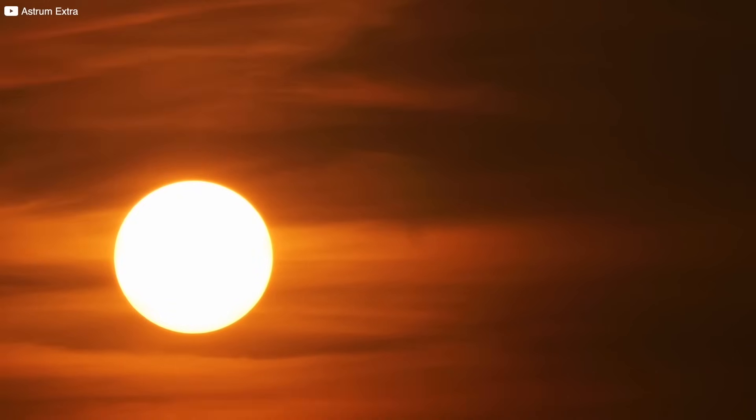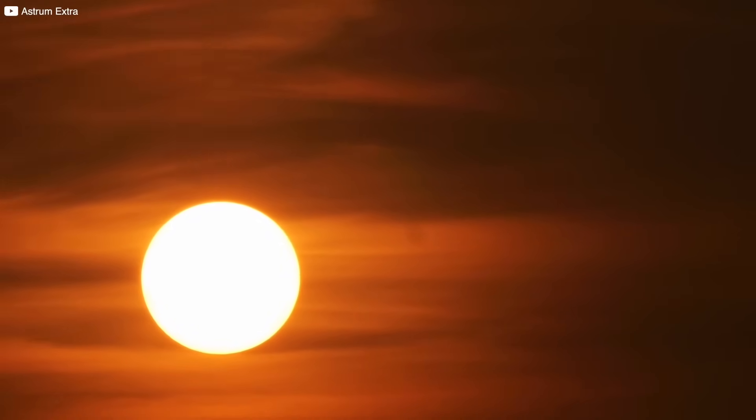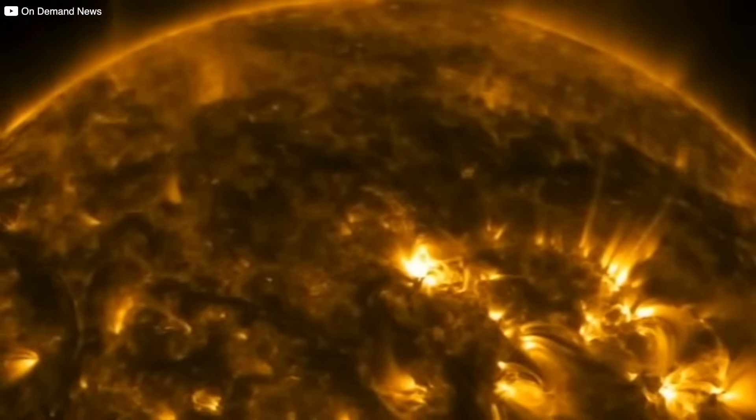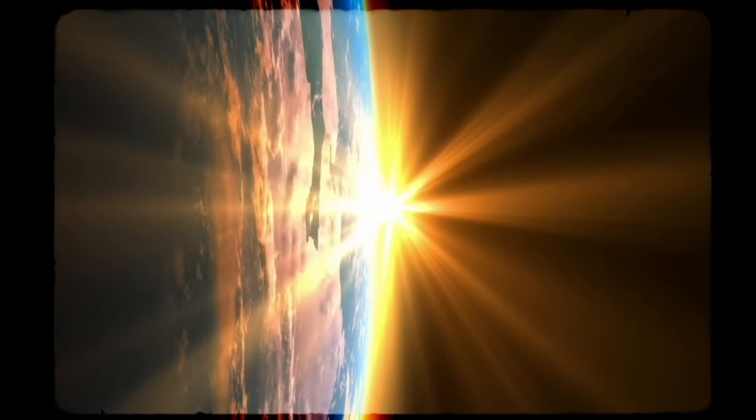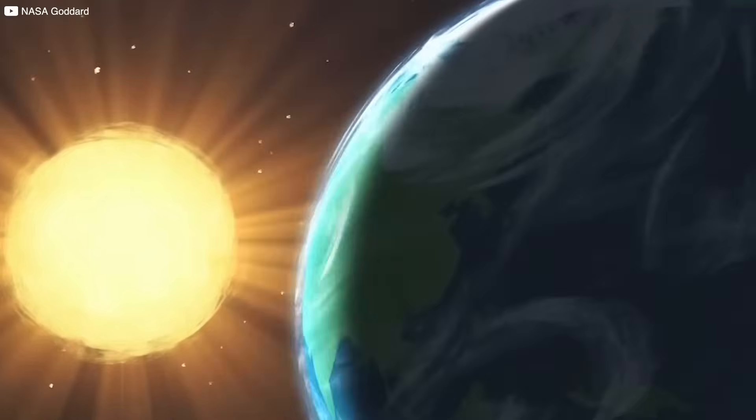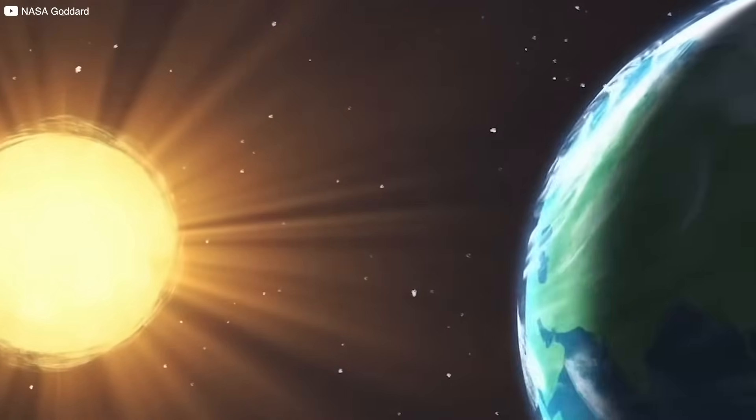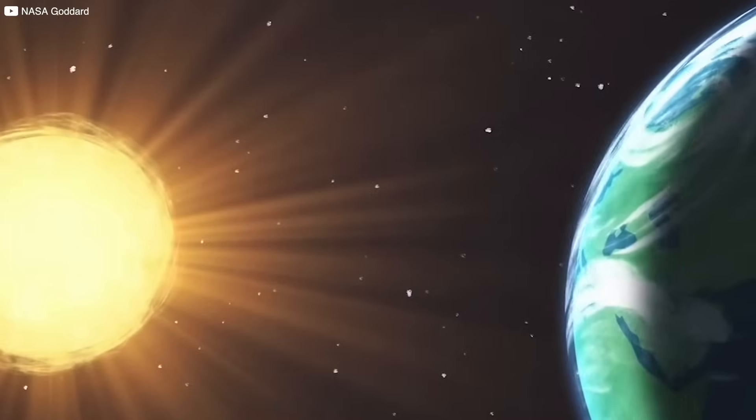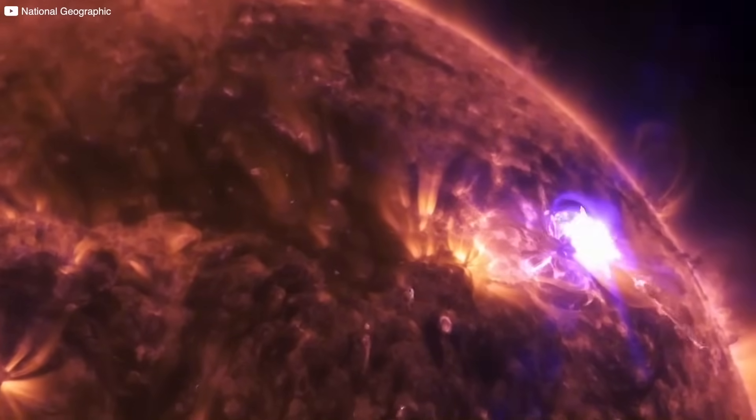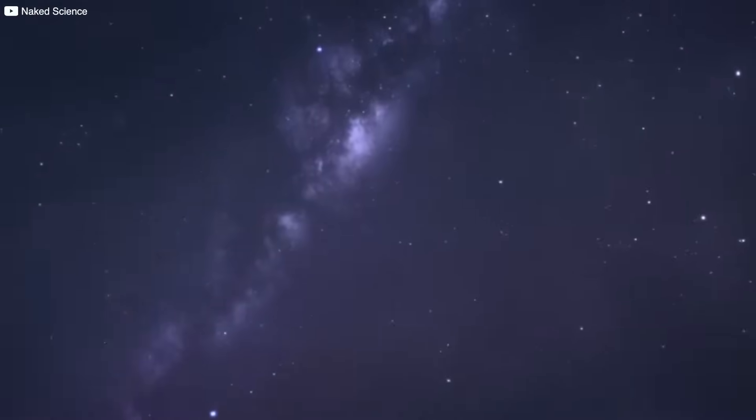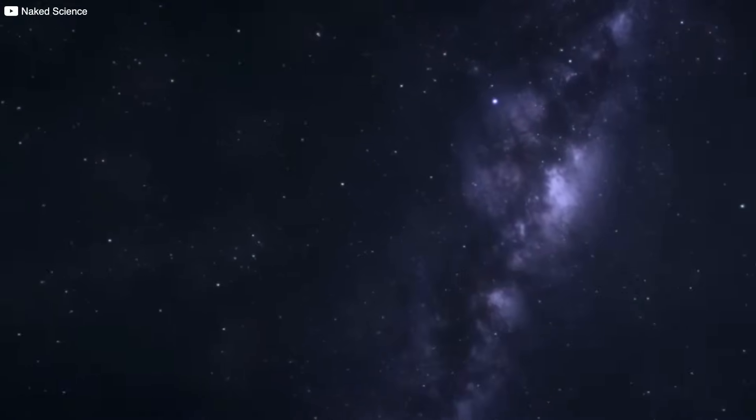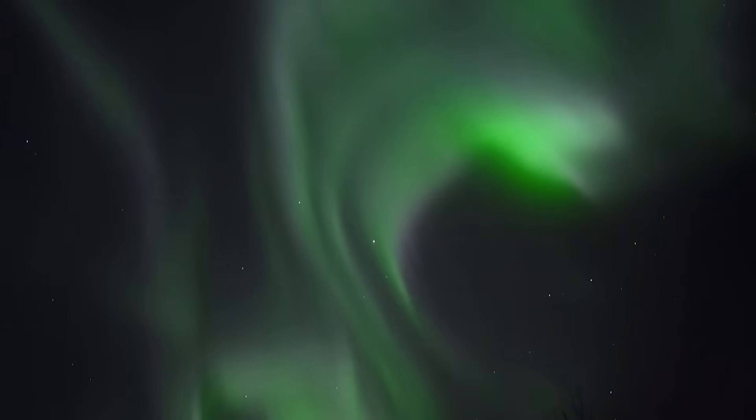Our Sun is more than a beacon of light and heat. It continuously emits a stream of charged particles known as the solar wind. This wind forms a colossal bubble around the solar system called the heliosphere, a protective shield that deflects much of the dangerous cosmic radiation from deep space. However, this bubble has limits. Billions of miles from the Sun, the solar wind slows as it collides with the interstellar medium, the thin soup of gas, dust, and magnetic fields that fills the void between stars.